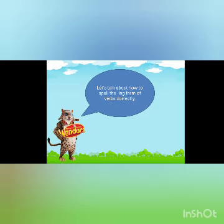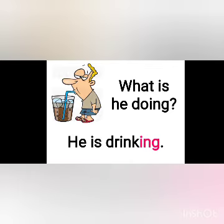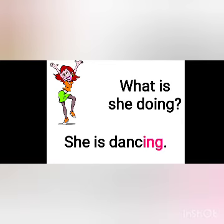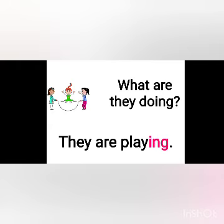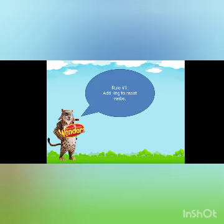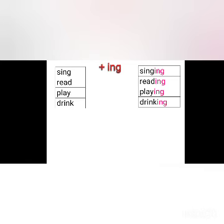Let's talk about how to spell the ING form of verbs correctly. What is he doing? He is drinking — it's just drink plus ING equals drinking. She is dancing. They are playing. Rule number one: add ING to most verbs. Sing, read, play, drink plus ING equals singing, reading, playing, drinking.